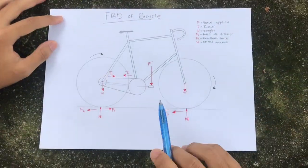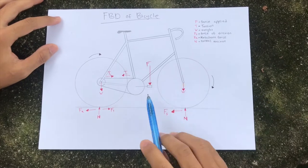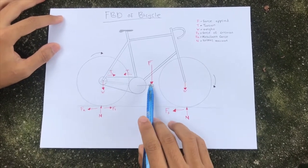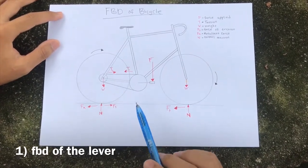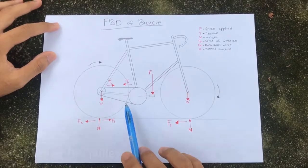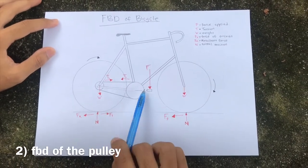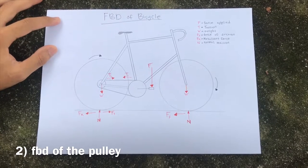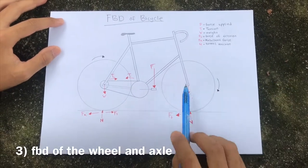Here we have the free body diagram of the bicycle. The first one is the lever system which represents the pedal assembly on the bicycle. Secondly, this pulley system here represents the sprocket and chain system on the bicycle. The wheel and axle.